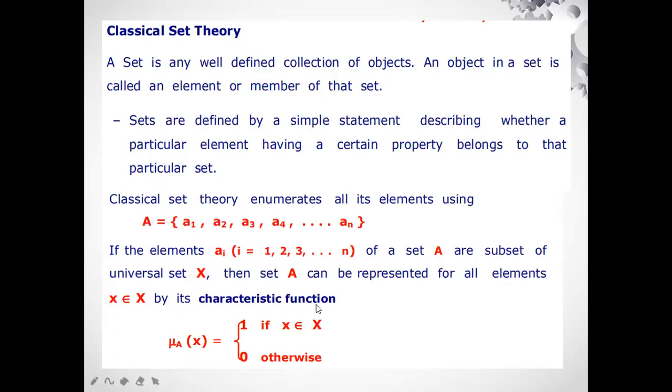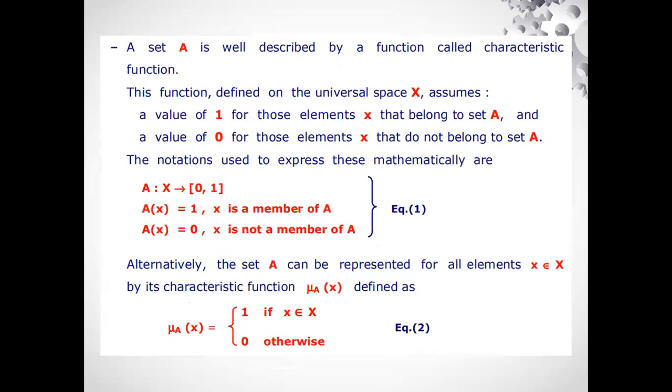That means small x belongs to this universal set by its characteristic function. So how we denoted this one? This is the membership function of set A, μA(x), where if X belongs to universal set, then you get the value as one, else you get the value as zero. That means if it belongs to, if it does not belongs to. Moving further, that means we only have two values, either zero or one.